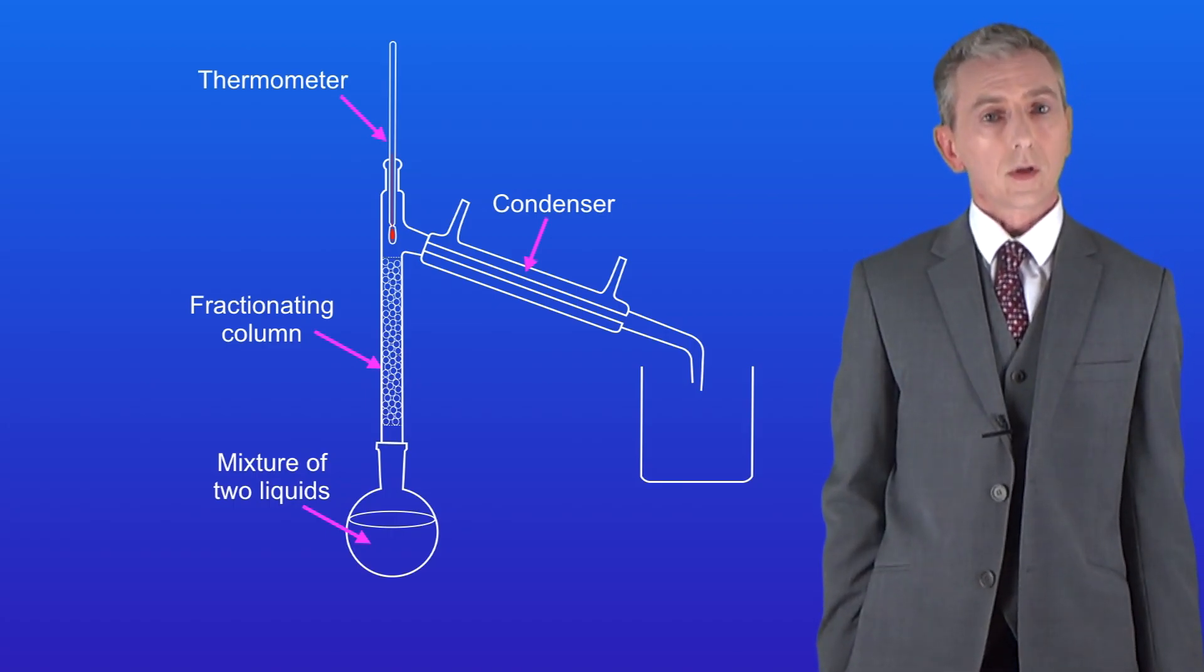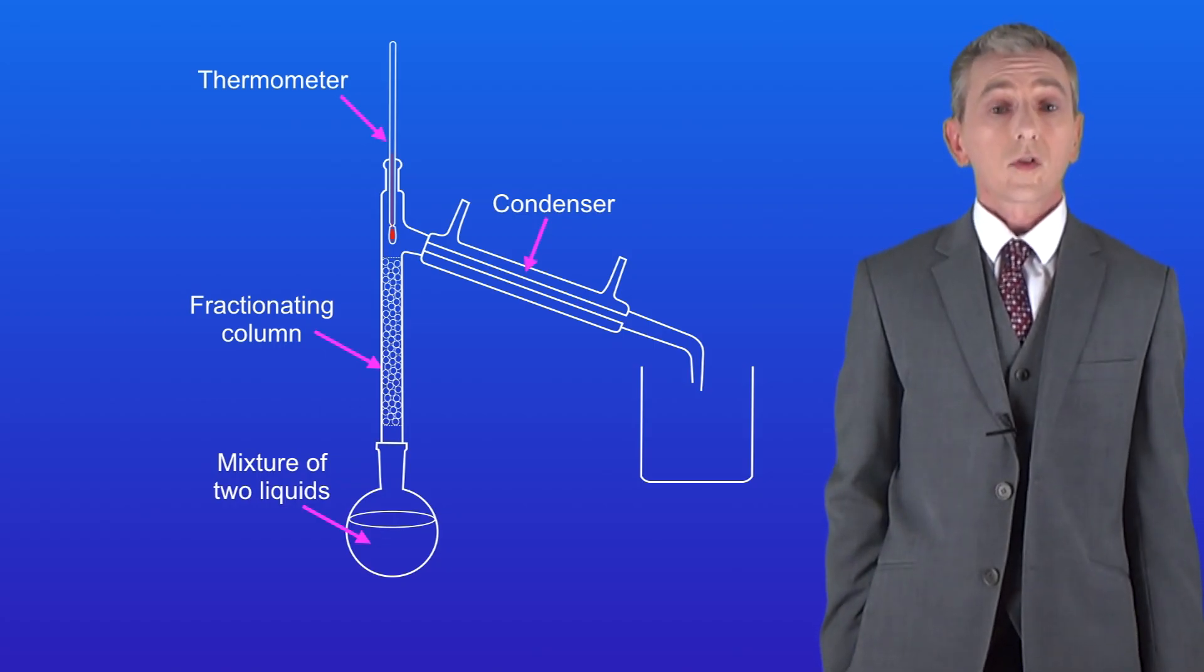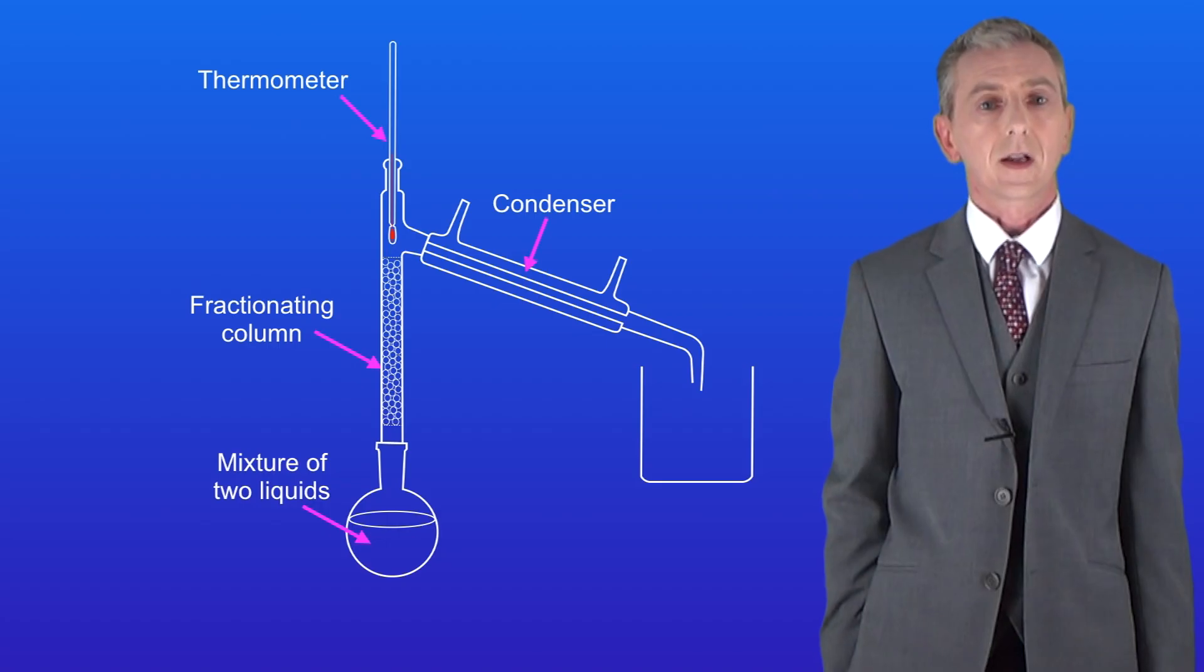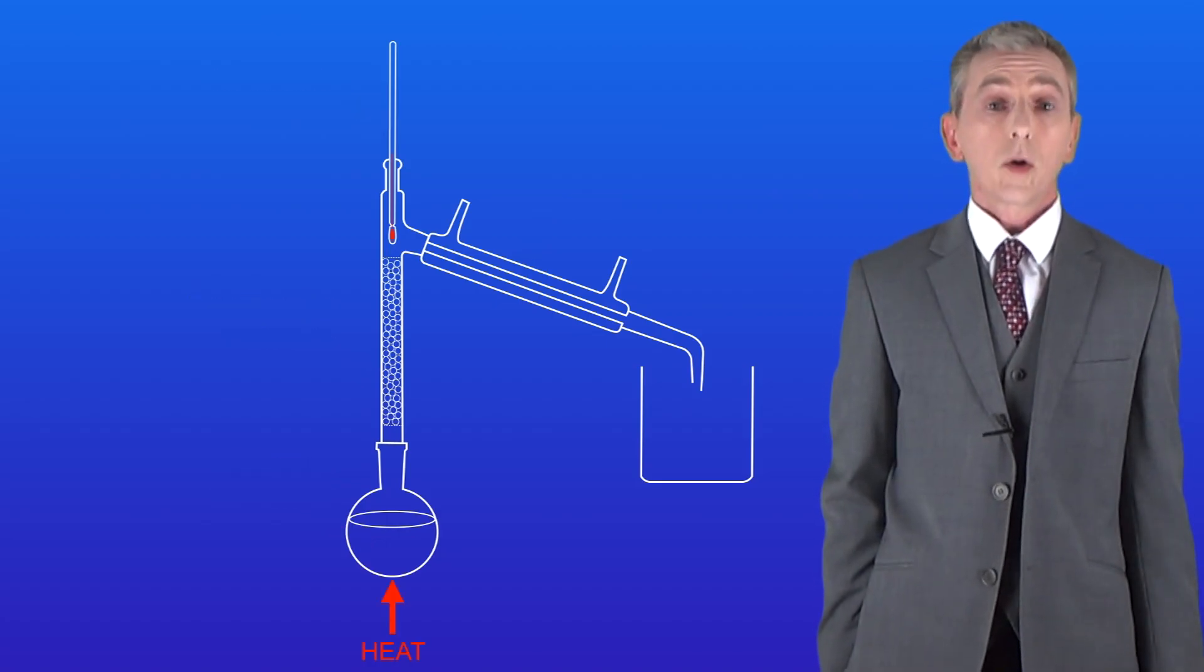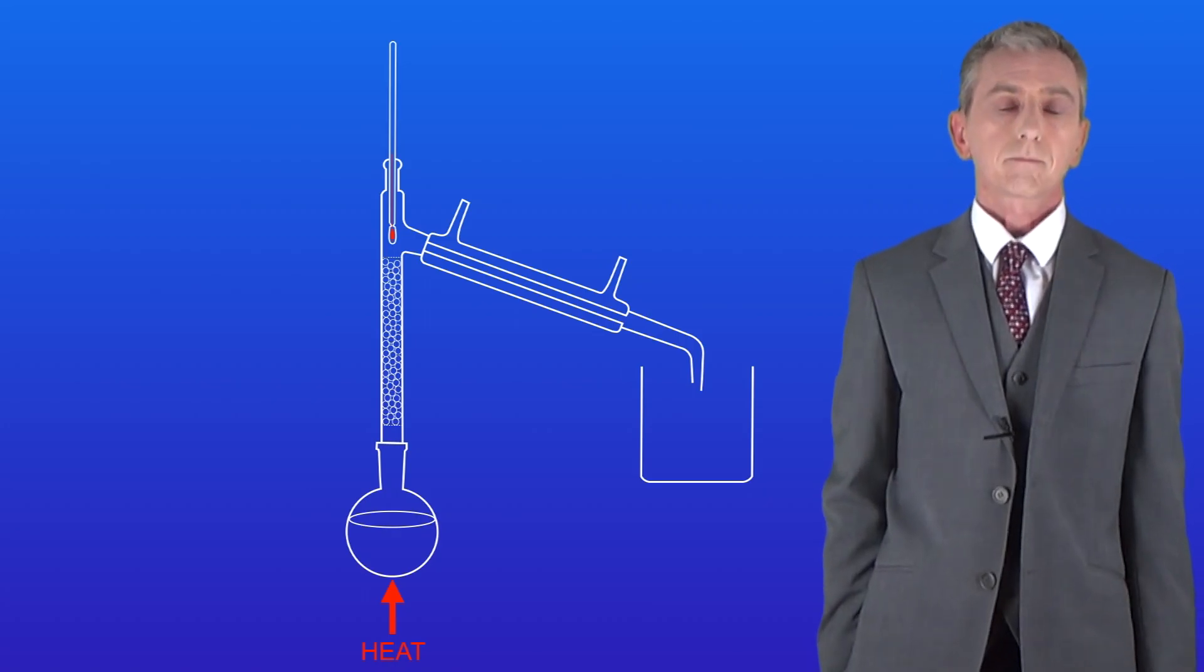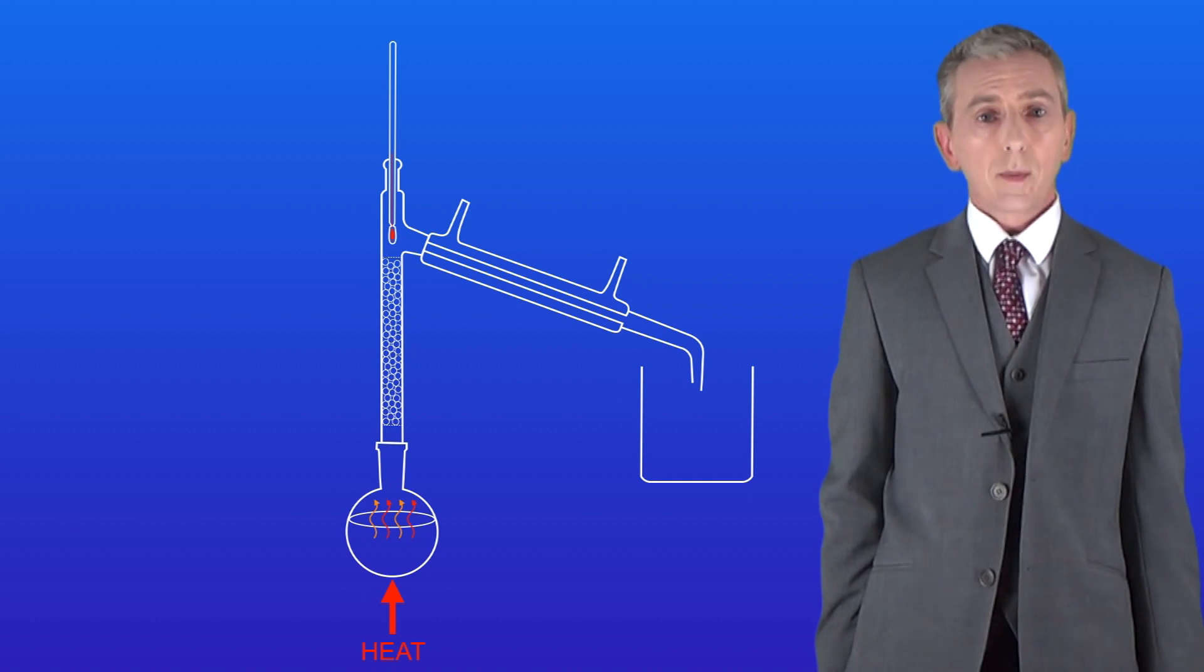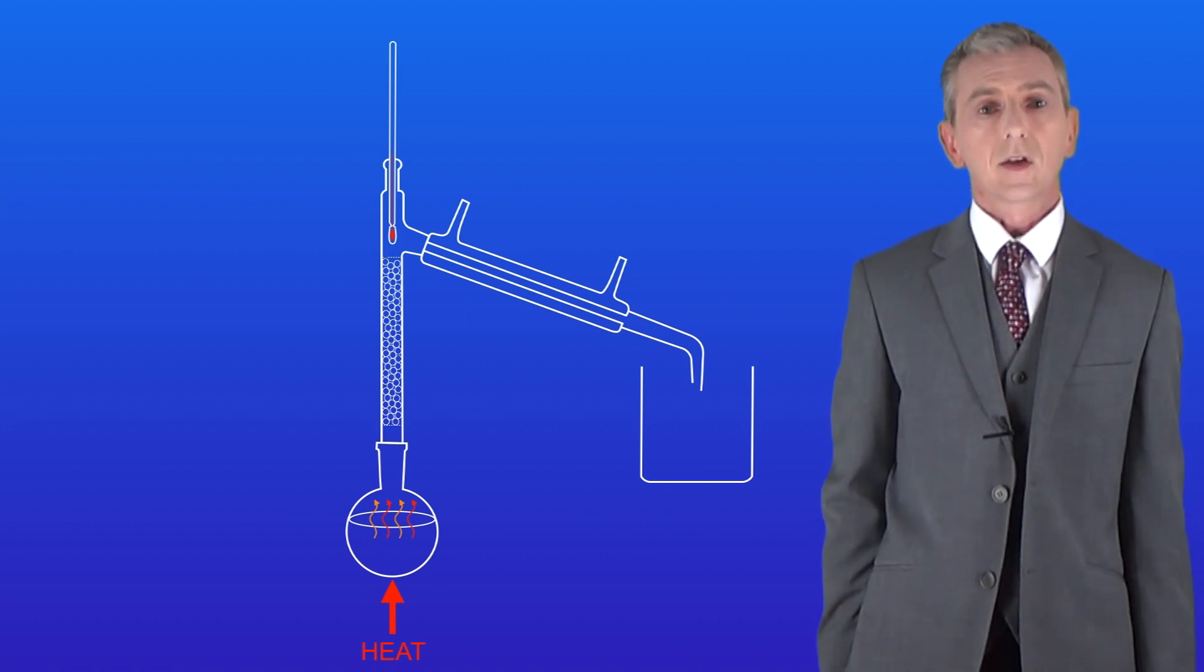Imagine that we're trying to separate two liquids. One's got a boiling point of 80 degrees Celsius and one's got a boiling point of 100 degrees Celsius. We start by gently heating our mixture just as we did with simple distillation. Now both of our liquids will start to evaporate, but the one with the lower boiling point will evaporate more easily.